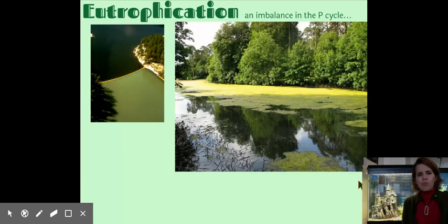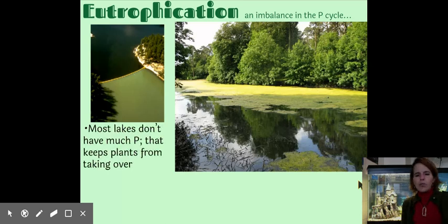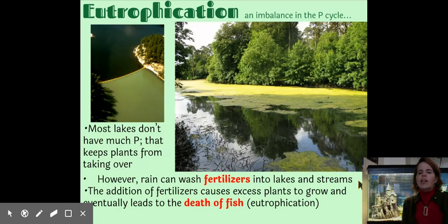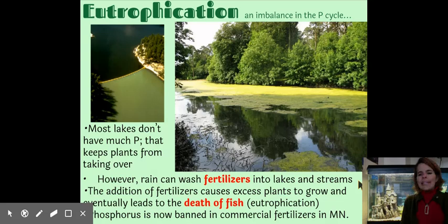This is where we have trouble. It's called eutrophication. Big ugly word. Eutrophication refers to an imbalance in the phosphorus cycle. Most lakes, they're supposed to be this way. Most lakes don't have much phosphorus. That keeps plants from taking over. So lakes are supposed to be clear. The pictures on this screen are showing you lakes that are high in phosphorus. However, rain can wash fertilizers from lakes and streams. The addition of fertilizers causes excess plants to grow, and that eventually leads to the death of fish. And that whole process is called eutrophication. Plants growing, fish dying, eutrophication. Phosphorus is now banned in commercial fertilizers in Minnesota to help prevent this process of eutrophication.